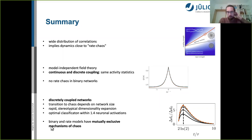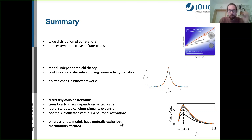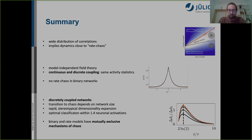To summarize: data from macaque cortex show wide correlation distributions relating to a spectral radius very close to one. We built a model-independent field theory for binary and rate networks yielding the same dynamical mean-field theory, enabling direct comparison. In discretely-coupled binary networks we found a network-size-dependent transition to chaos and a stereotypical transient dimensionality expansion of represented stimuli enabling fast classification — even deep in the chaotic regime. Rate and binary networks are mutually exclusive concerning chaos: if you match a rate network's statistics to a binary network, it is non-chaotic, meaning binary-network chaos is fundamentally different from rate chaos.